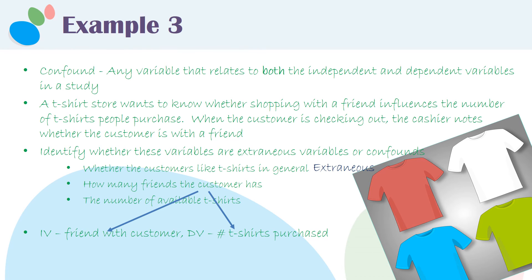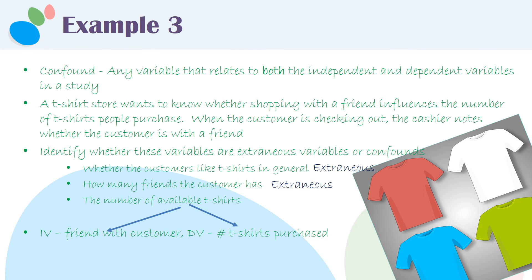How many friends the customer has is probably related to whether the customer brought a friend in, but it is probably not related to the number of t-shirts purchased. And the number of available t-shirts is surely linked to how many t-shirts a customer purchases, but not linked to whether the customer brings a friend in. So these are also extraneous variables.